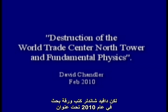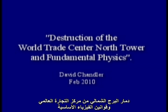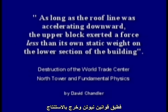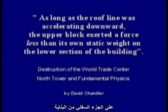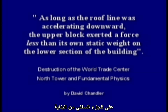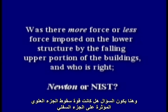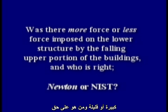But in 2010, David Chandler wrote a paper called 'Destruction of the World Trade Center North Tower and Fundamental Physics.' Citing Newton's laws, he concluded: 'As long as the roof line was accelerating downward, the upper block exerted a force less than its own static weight on the lower section of the building.' So was there more force or less force imposed on the lower structure by the falling upper portion of the buildings? And who is right — Newton or NIST?